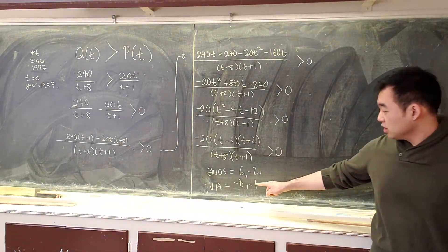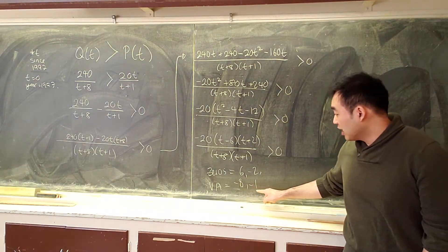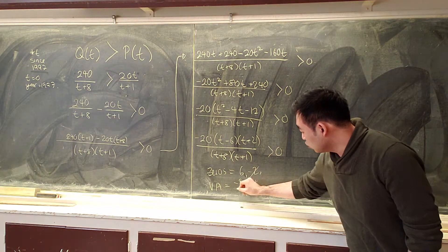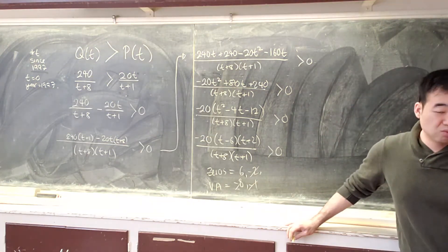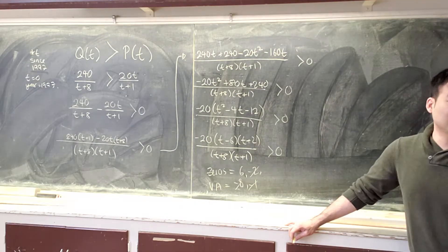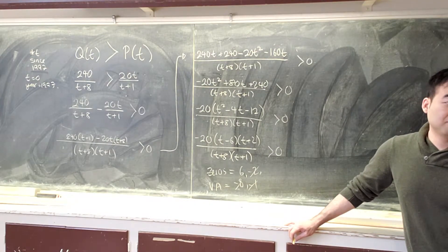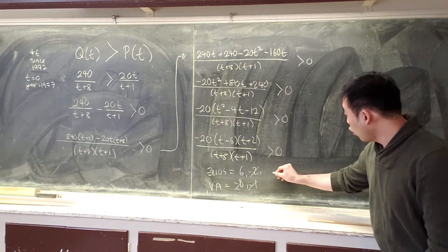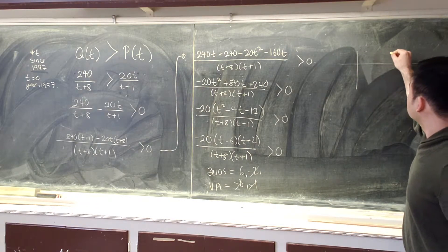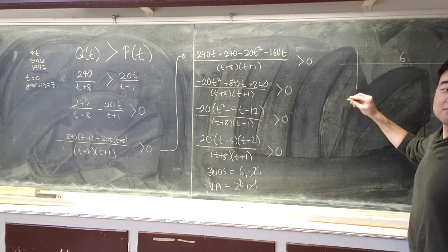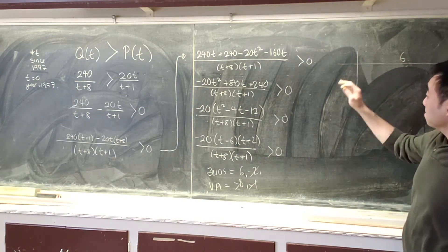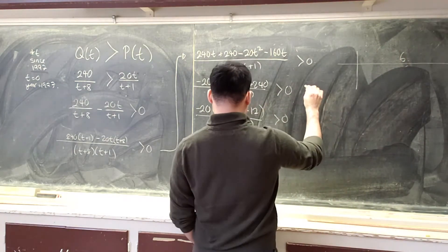A couple of things to note: these negatives, just as I mentioned before, we don't want to use. These will all be rejected because we don't care about the time prior to 1997. So the only critical number we want to test is 6.